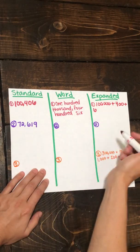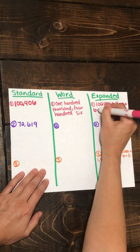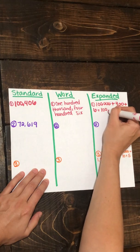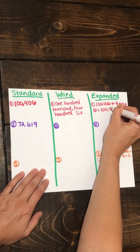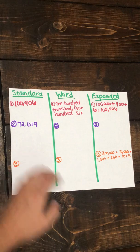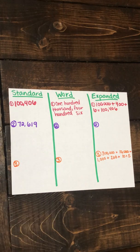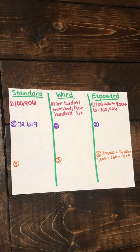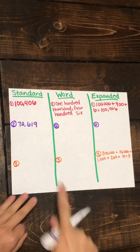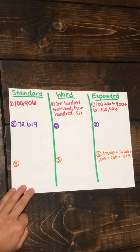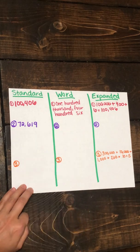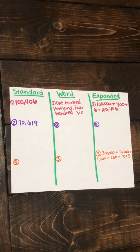If we were to add that up, that would equal one hundred thousand four hundred six. Now let's move on to our second example. We're given the standard form this time. Let's go ahead and switch it to expanded form, and that may help us with our word form as well.